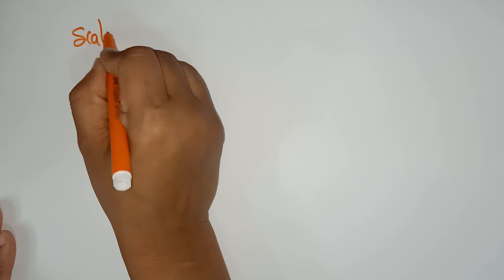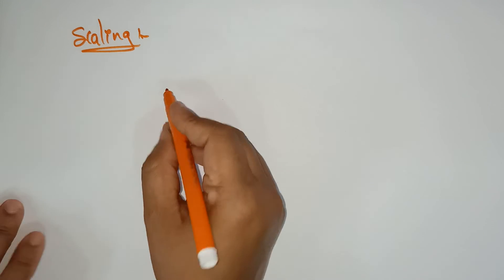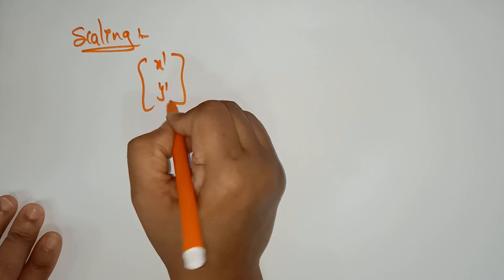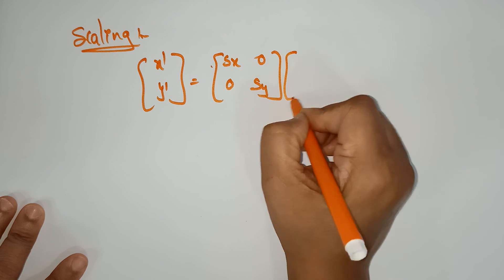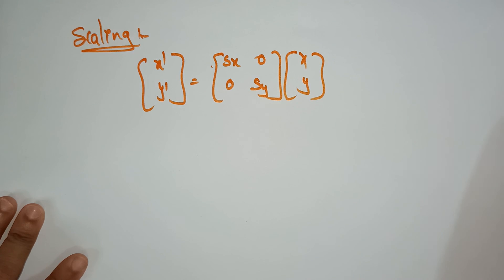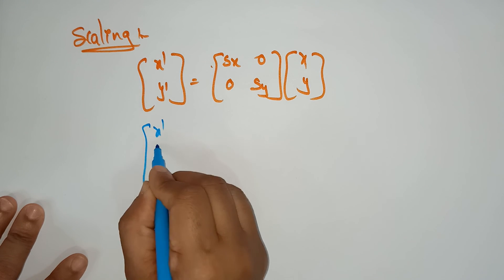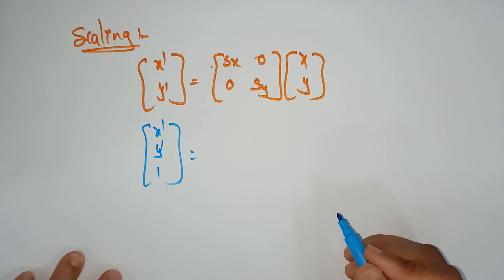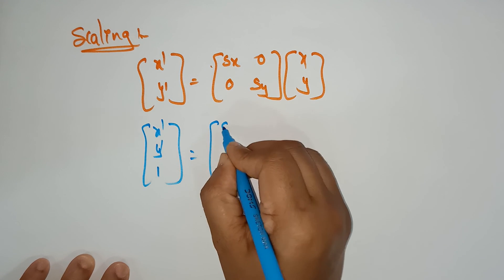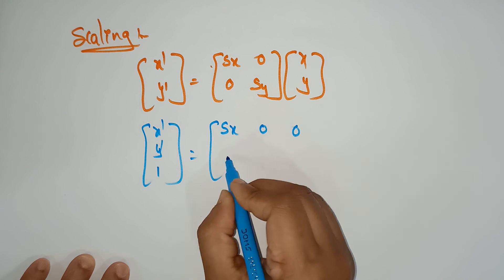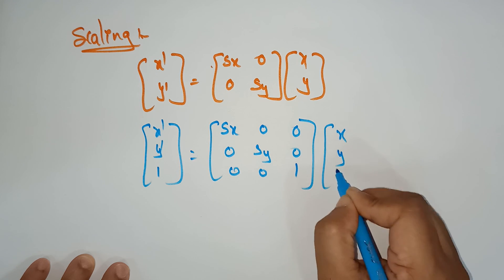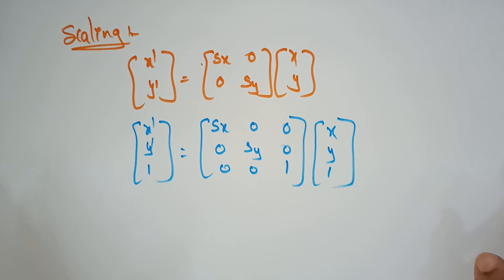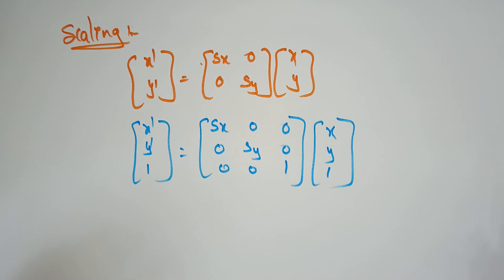Now let's see homogeneous coordinates for scaling. The general scaling formula is [X', Y'] = [SX, 0; 0, SY] × [X, Y]. With the homogeneous coordinate, taking H = 1, the matrix becomes: [SX, 0, 0; 0, SY, 0; 0, 0, 1] multiplied by [X, Y, 1]. This is the homogeneous coordinate formula for all transformations: translations, rotation, and scaling. Thank you.